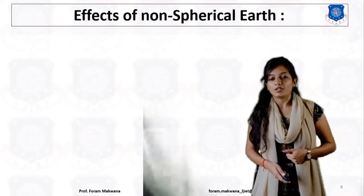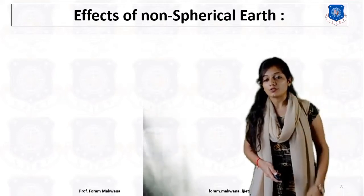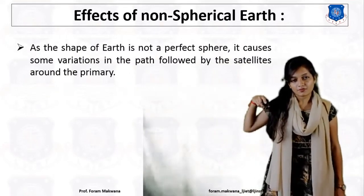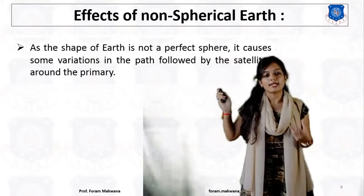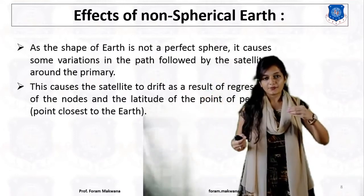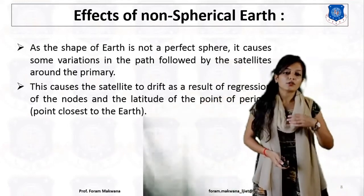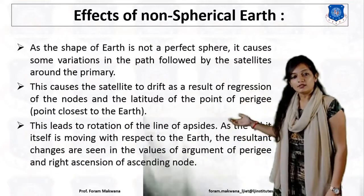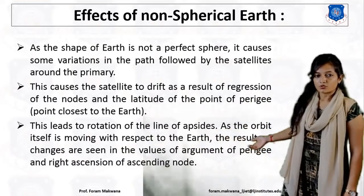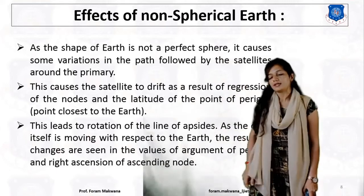Now, what is the effect of the non-spherical earth? We know that ideally the earth is spherical, but in reality it is non-spherical. This causes variation in the path followed by the satellite, causing it to drift — a small change in position — and results in the regression of nodes and the latitude of the perigee point. This leads to a rotation of the line of apsides, resulting in changes to the argument of perigee and the right ascension of ascending node.